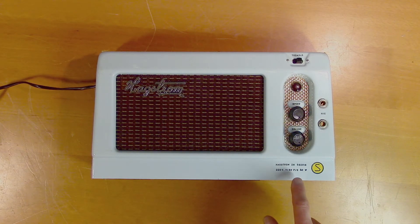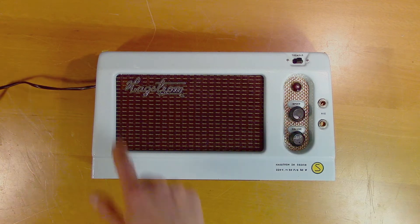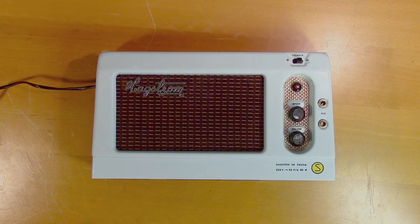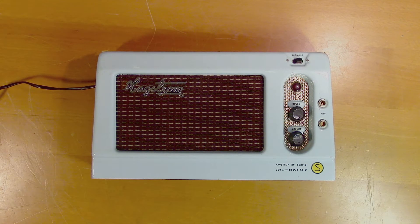This is the Hågström 26. It's a Swedish made all vacuum tube amplifier cabinet. Hågström is a Swedish company probably most known for their guitars internationally, but they also made other instruments and audio equipment.